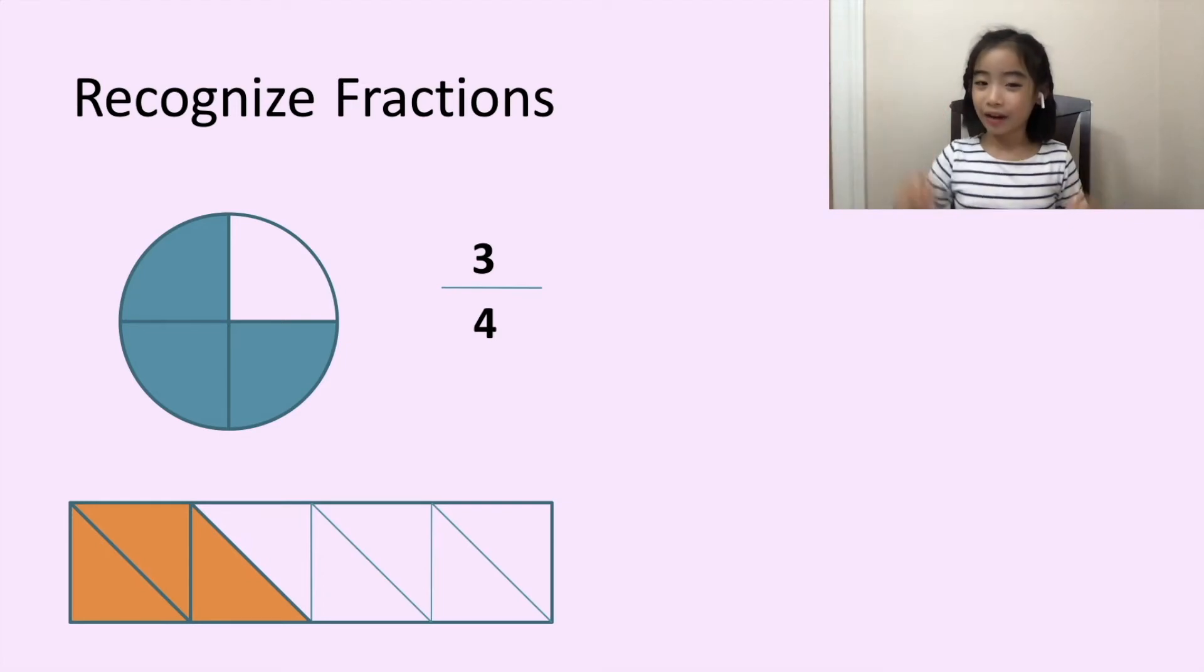Now, let's look at the next example. Here is a rectangle. It is divided into one, two, three, four, five, six, seven, eight. Eight pieces. And here are one, two, three. Three pieces are shaded in. We write it like this. And let's say it together. Three eighths. Or three out of eight pieces.